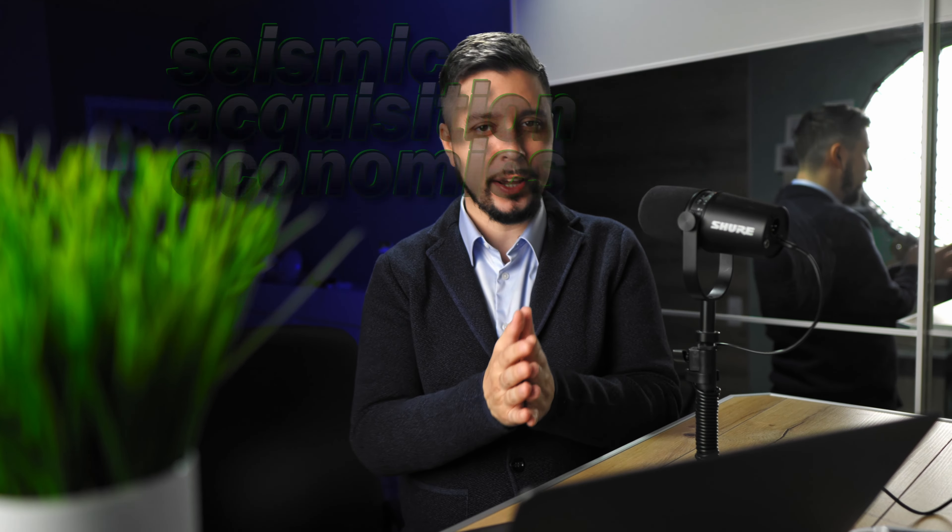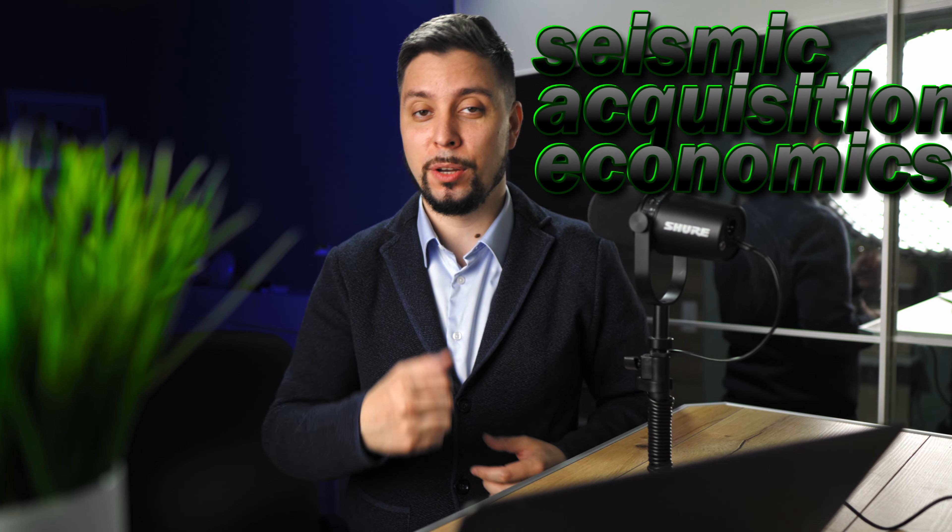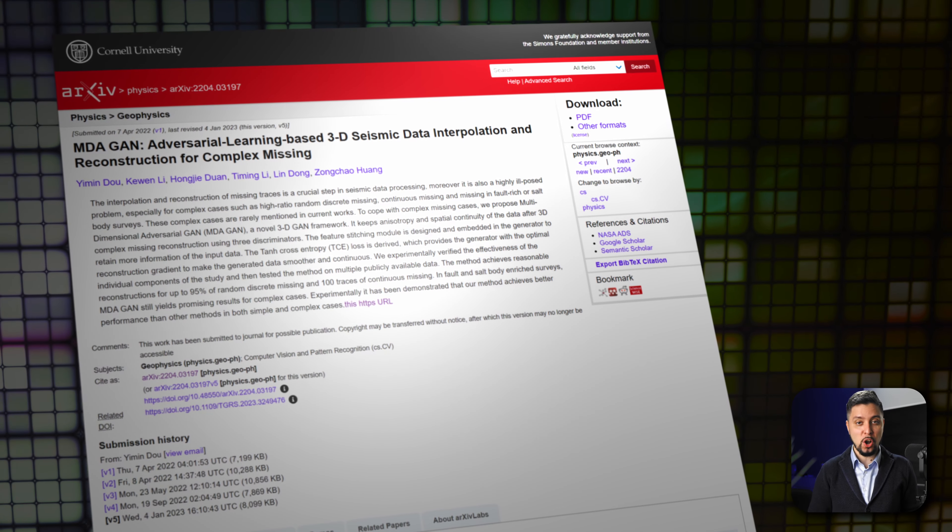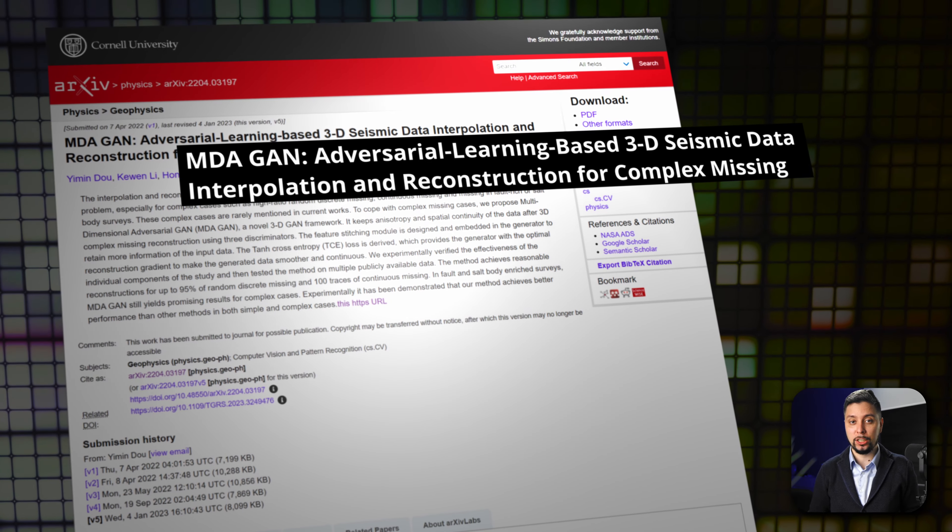As our industry evolves and we are interested in optimizing the cost of acquisition, there's a growing need for 3D interpolation and reconstruction techniques. In light of this, a 2022 paper by Huming Dou introduced a novel method called Multi-Dimensional Adversarial GAN, or MDA-GAN for short, for reconstruction of missing traces in seismic data.